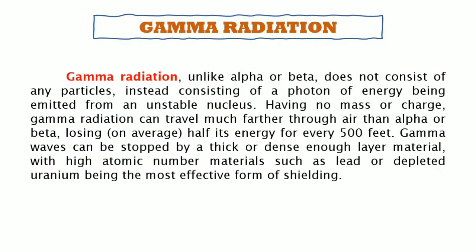Gamma radiation, unlike alpha or beta, does not consist of any particles, instead consisting of a photon of energy being emitted from an unstable nucleus. Having no mass or charge, gamma radiation can travel much farther through air than alpha or beta, losing half its energy for every 500 feet. Gamma waves can be stopped by a thick or dense enough material, with high atomic number material such as lead or depleted uranium being the most effective form of shielding.